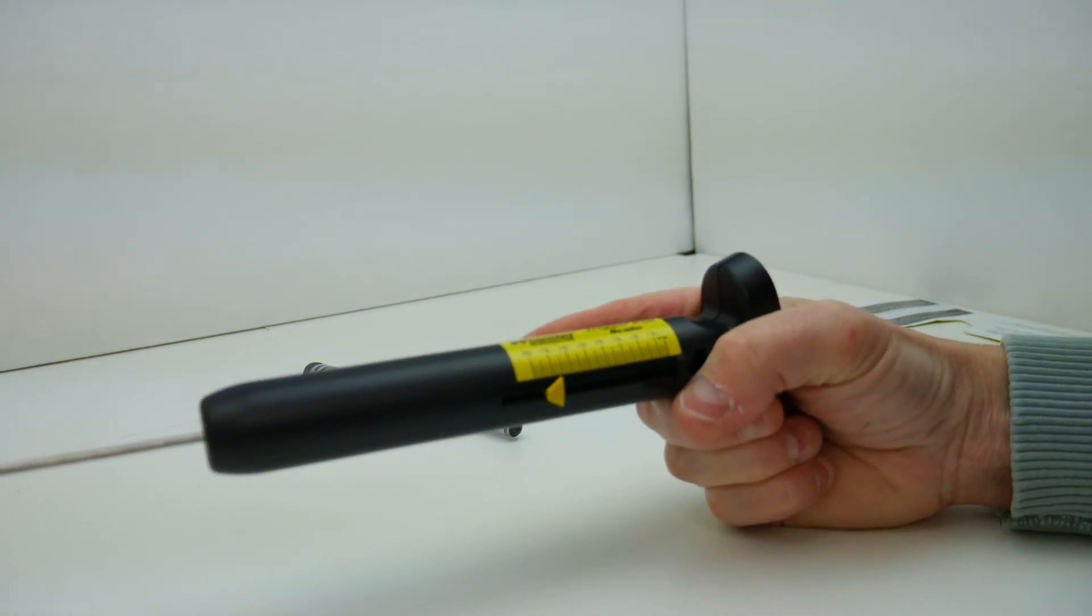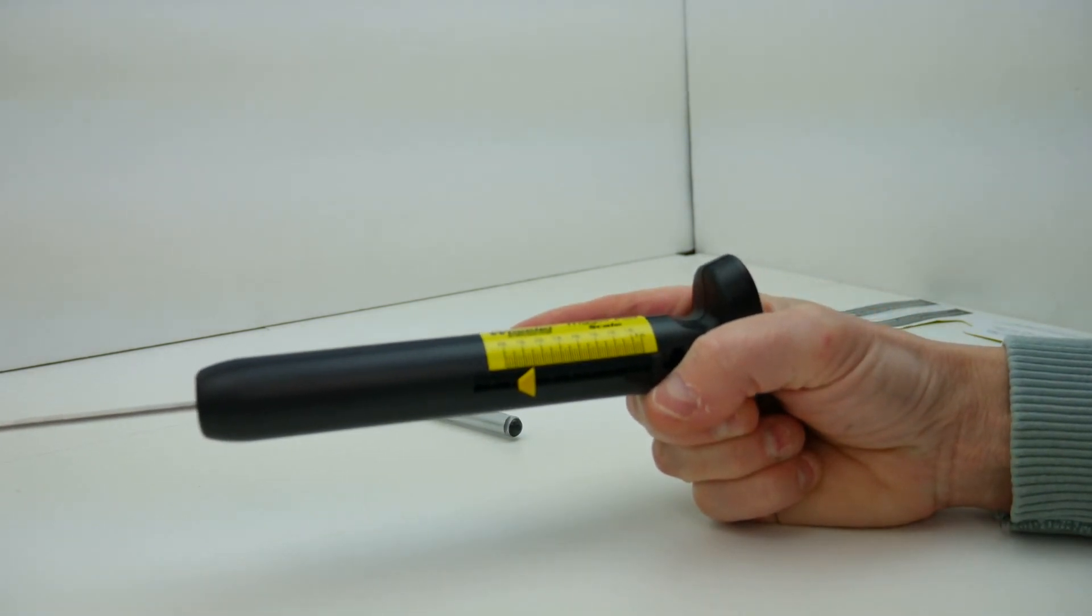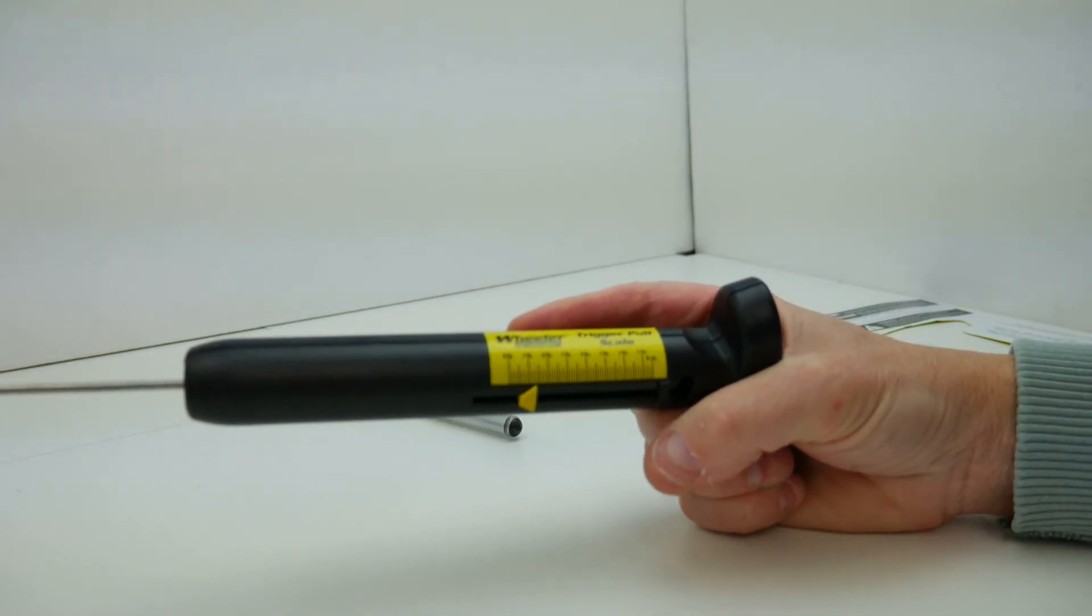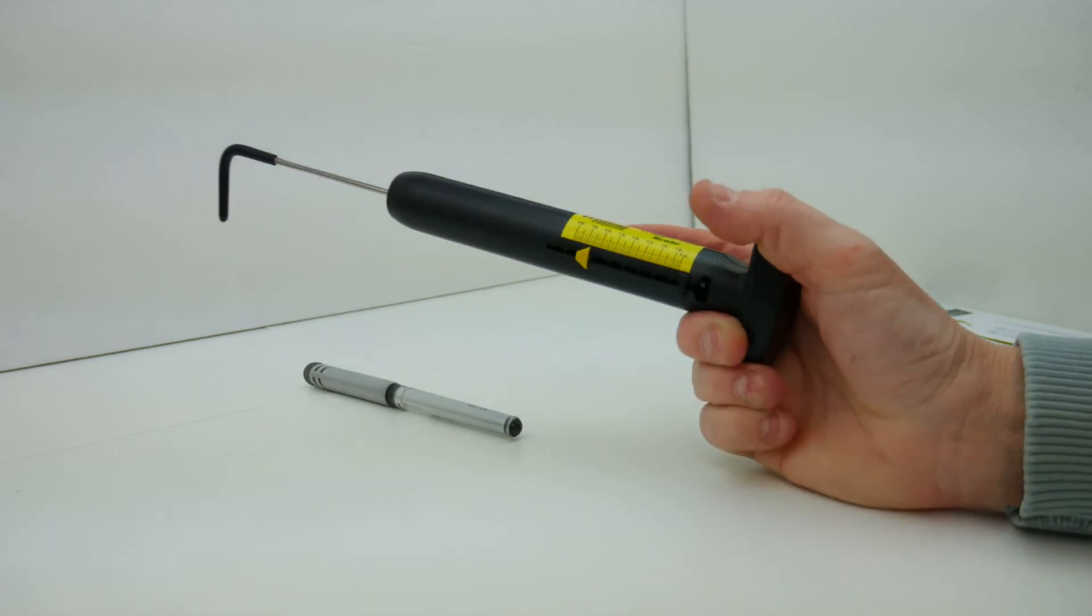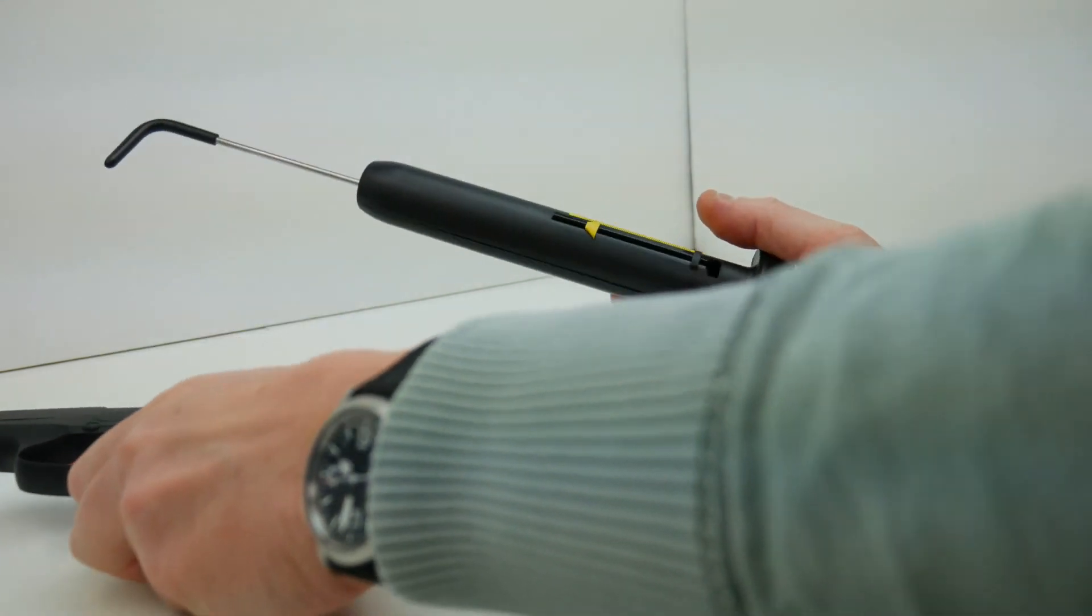Two four six eight ten, six pounds ten ounces. So that kind of gives us an idea of where our average pull weight is on the Ruger LCP.